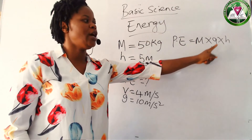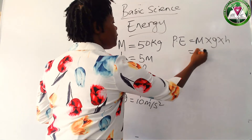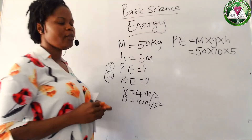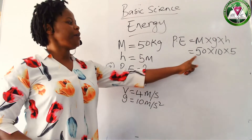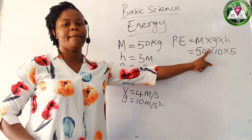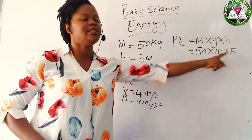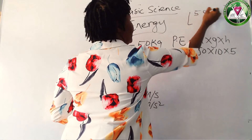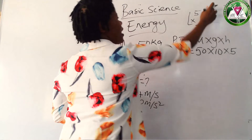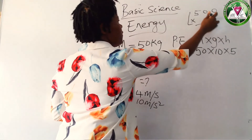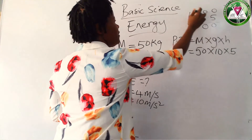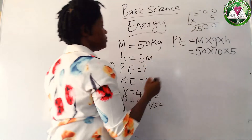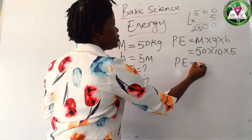We will substitute for M, G, and H. That will be equal to 50 times 10 times 5. First, 50 times 10 gives us 500. Then 500 times 5: 5 times 0 is 0, 5 times 0 is 0, 5 times 5 gives us 25. So our PE is equal to 2500.